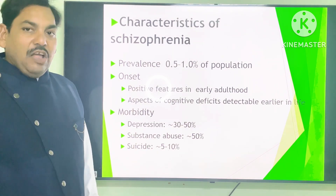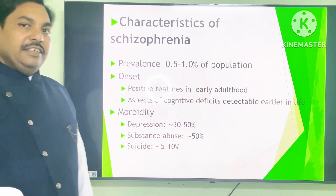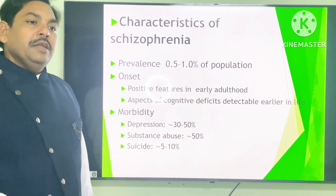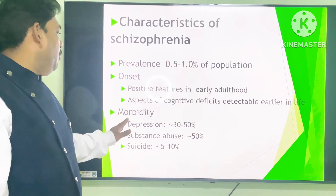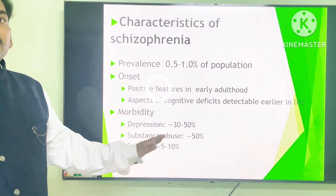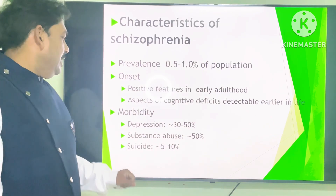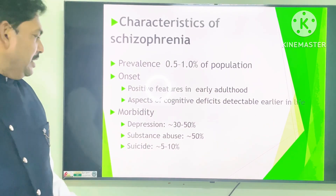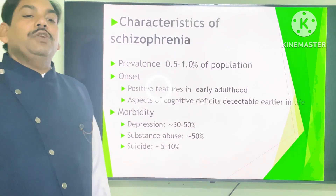Cognitive factors are related to brain memory, meaning impairment of memory and ability. Comorbidities include depression in 30 to 50 percent of cases, substance abuse in 50 percent of cases, and suicidal risk in 5 to 10 percent of cases.